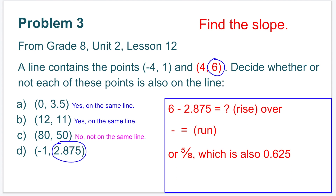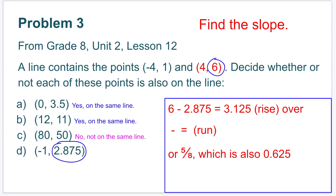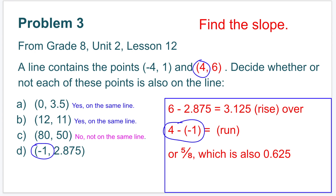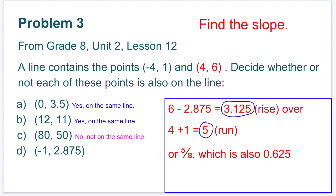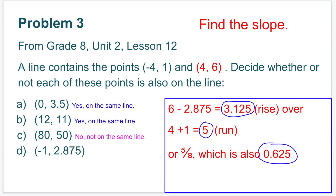D. 6 minus 2.875 equals 3.125. So the rise would be 3.125 over 4 minus a negative 1. 4 minus a negative 1 is the same as 4 plus 1, so the run would be 5. 3.125 over 5, or 3.125 divided by 5, equals 0.625. Which is equivalent — it has the same slope. Yes, the coordinates negative 1 and 2.875 would be on the same line.